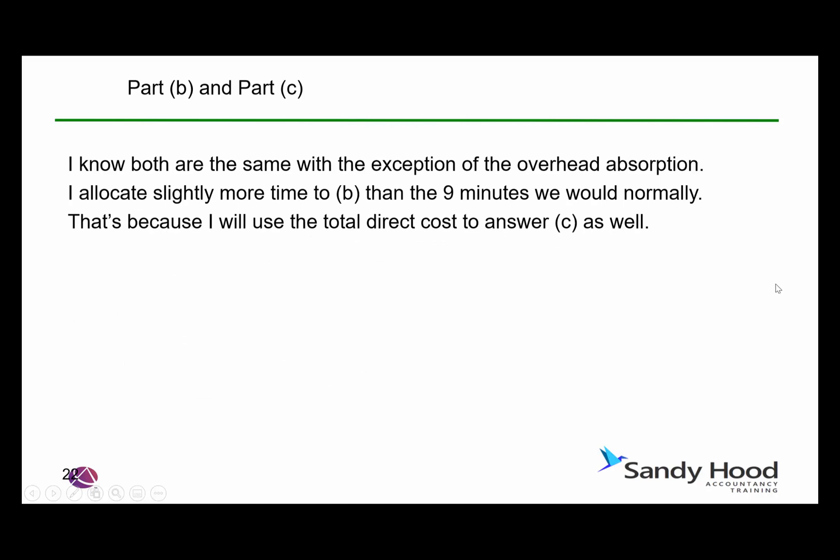Now for Parts B and C — we've read the question. I know both parts are the same with one exception: the overhead absorption for Part B needs to be based on the traditional absorption approach, and for Part C, using ABC. So I can slightly reallocate my time by calculating the direct costs within Part B and then using that information a second time to answer Part C.